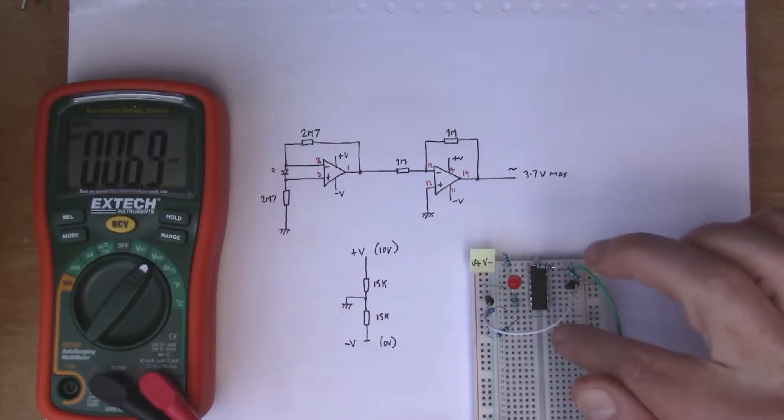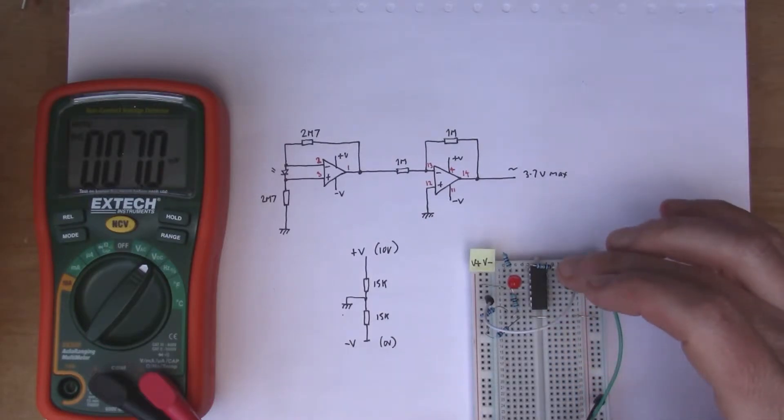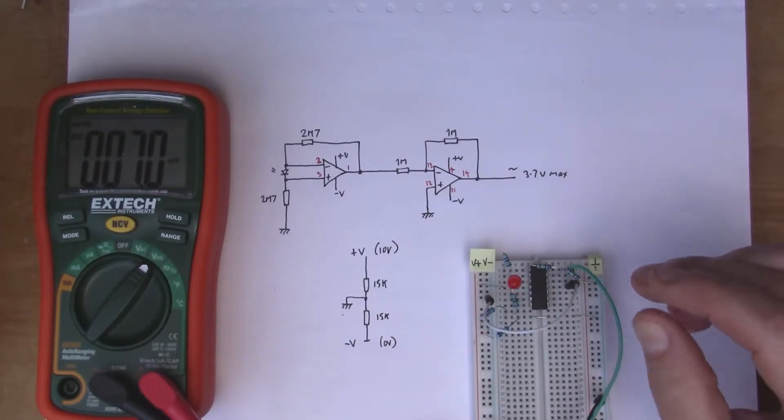So I thought what I would do is use an op amp to boost up the signal, and then I'll get an output voltage here which I can feed into something else like a microcontroller.